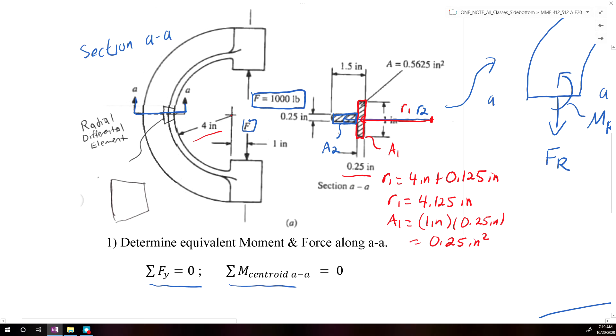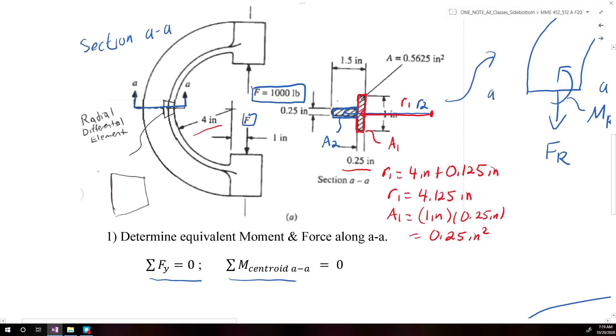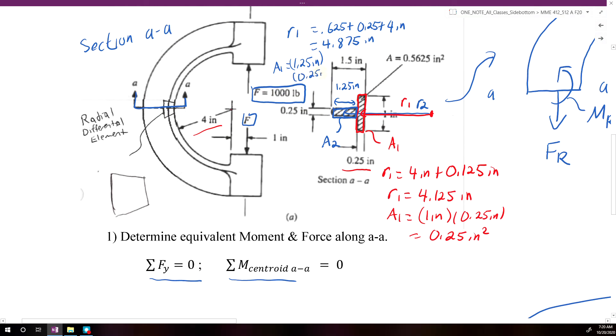R2 would be the centroid of this other section. So the length of this section is equal to 1.25 inches, so half of 1.25 is 0.625, so we need to add 0.625 plus 0.25 plus 4 inches to get our value for R2. So we would get 4.875 for R2. And then the last one is, we need to know what A2 is. So A2 would be equal to 1.25 inches times the width of that section, which is equal to 0.25 inches.